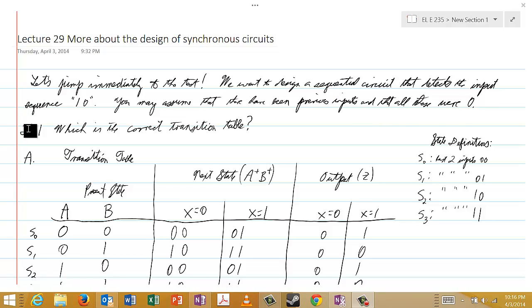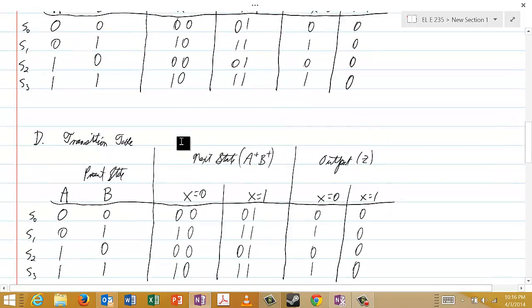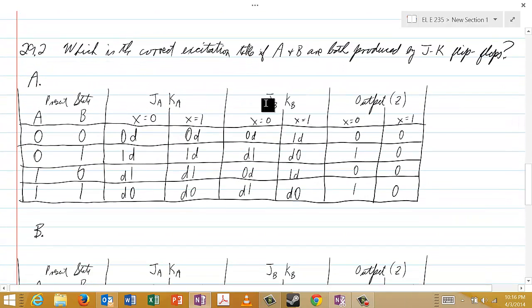And so, in 29.1, I'm asking you which is the correct transition table, and in 29.2, I'm asking you which is the correct excitation table if A and B are both produced by JK flip-flops.